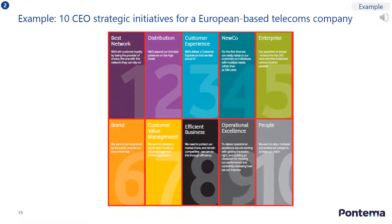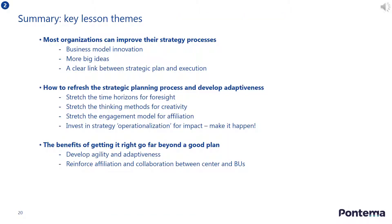As mentioned, it is important to convert your strategy into some key operational initiatives that can easily be remembered and recalled by all employees. Here are 10 initiatives used by a European-based telecoms company, such as Best Network, Brand, and Efficient Business — these are easy for the leadership team to communicate and for employees to remember. In summary, most organizations can improve their strategy processes via business model innovation, more big ideas, and the creation of a clear link between the strategic plan and its execution. Organizations can refresh their strategic planning processes by stretching the time horizons for foresight, the thinking methods for creativity, and the engagement model for affiliation and buy-in.